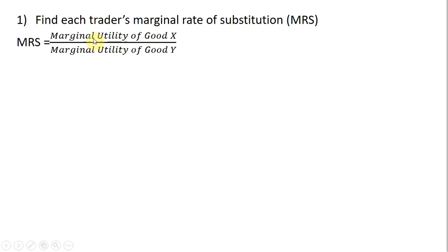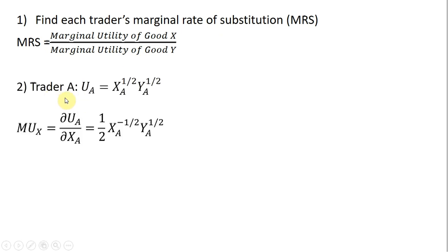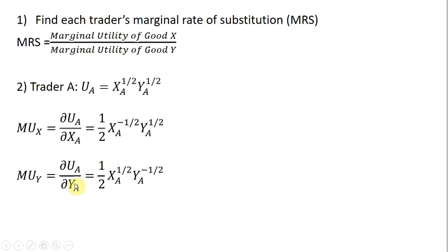The first step is to find each trader's marginal rate of substitution, which is defined as the marginal utility of good X divided by the marginal utility of good Y. Given trader A's utility function, the marginal utility of good X is the partial derivative of trader A's utility function with respect to good X. So we bring down the one-half in front from the X term, then it's going to be one-half minus one, leaving us X raised to the minus one-half power, and we don't do anything to good Y. The marginal utility of good Y is found by taking the partial derivative of the utility function with respect to good Y. So we have the one-half term on good Y — bringing that down in front, one-half minus one in the exponent gives us the marginal utility of good Y.